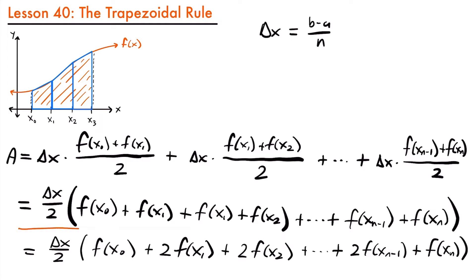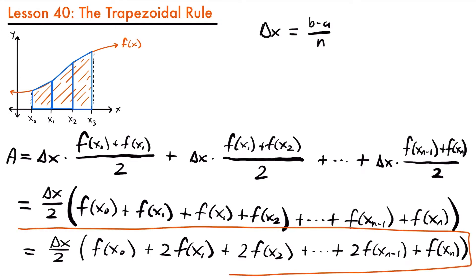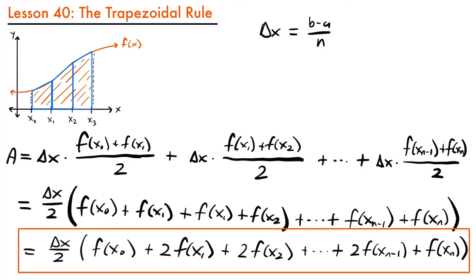What we just found is the trapezoidal rule. To approximate the area under a function using n trapezoids, use this formula. Notice that the coefficients follow the pattern: 1, 2, 2, 2, ..., 2, 1 — where the first and last terms have coefficient 1, and all interior terms have coefficient 2. Keep this pattern in mind as we look at an example.